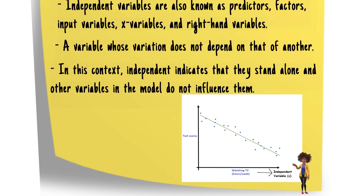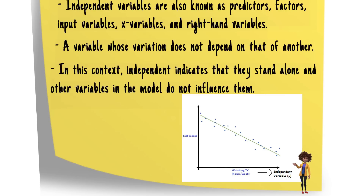In notation, statisticians commonly denote independent variables using X. On graphs, analysts place independent variables on the horizontal, or X, axis.